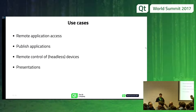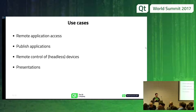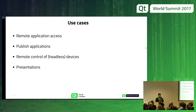Use cases we can find for this: we can have remote application access, so if we don't want to go to the physical computer and make changes, we can use the browser and do it remotely. We can publish applications — for example, if we're at home and need to access an application on a computer in the office. Remote control of headless devices was the first case we implemented, and of course, presentations.